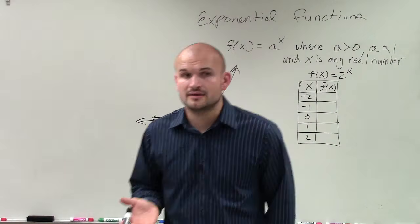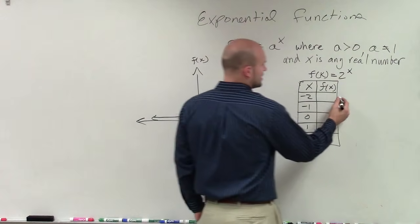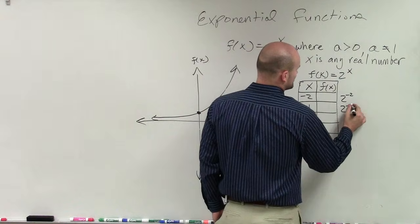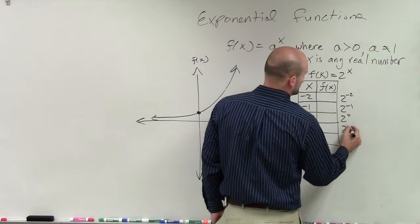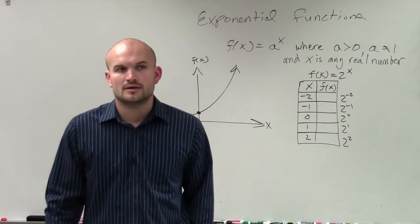Now, remember when graphing by using a table, we just take those values and we plug them in, right? So this is 2^(-2). This would be 2^(-1), 2^0, 2^1, and 2^2.